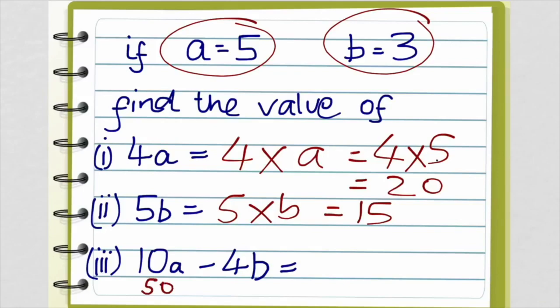Take away 4 times b: 4 times b is 4 times 3, which is 12. So 50 take away 12 equals 38.